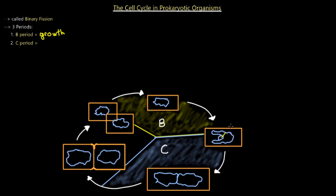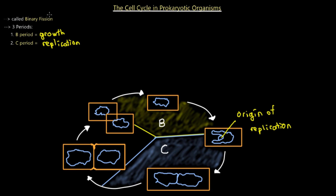As soon as DNA replication begins — you can see this would be the origin of replication — the B period ends and the C period begins, outlined by DNA replication. The DNA is replicated and doubled, so there are two chromosomes now. This part right here is still the unreplicated part. Once the entire chromosome is replicated and the two copies separate to opposite sides of the cell, that marks the end of the C period.